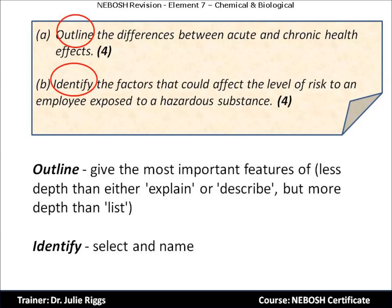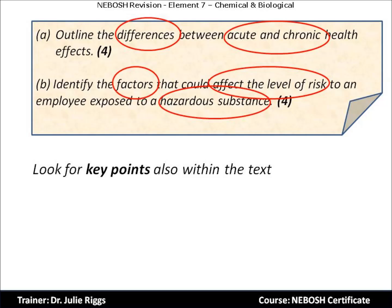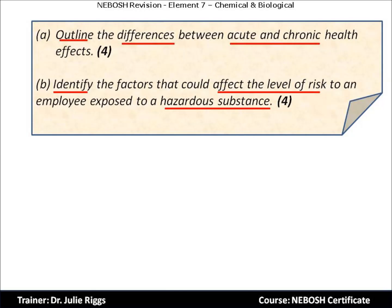The examiner is looking for four diverse answers for question A and four diverse answers for question B. When we use the word diverse, we mean try not to be too repetitive — remember that you're trying to show your breadth of answer. Look for key points within the text: in part A, establish the differences between acute and chronic; in part B, identify the factors that could affect the level of risk to a hazardous substance. You may find it useful to underline keywords on your exam paper. Put your pen down before reading to ensure full focus on the questions. Check those action verbs, check the marking for each question, and give yourself suitable timings to answer.